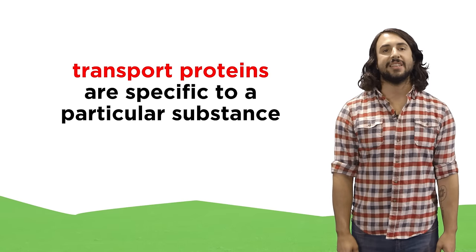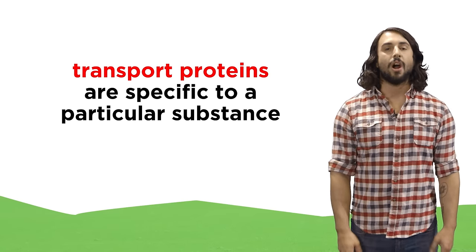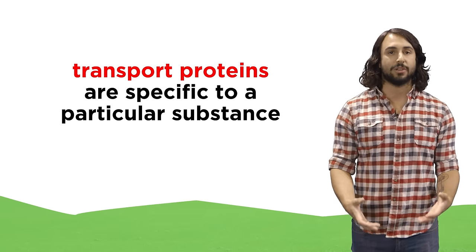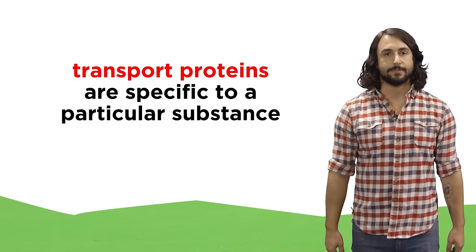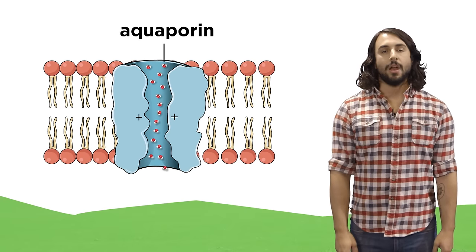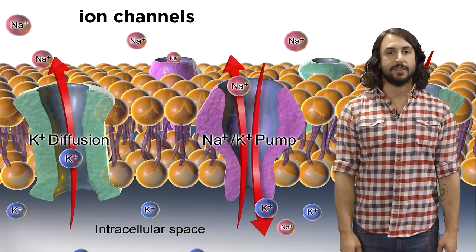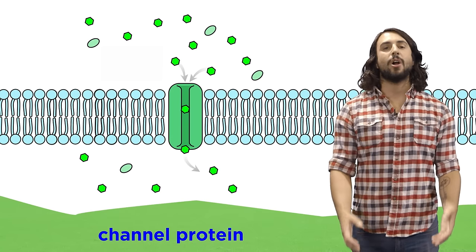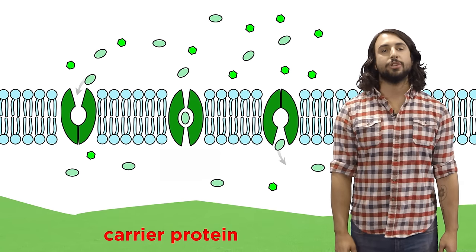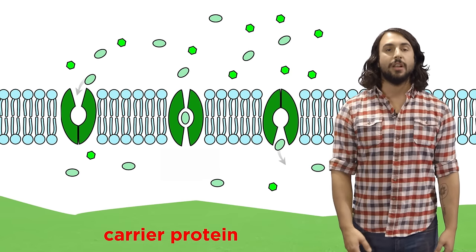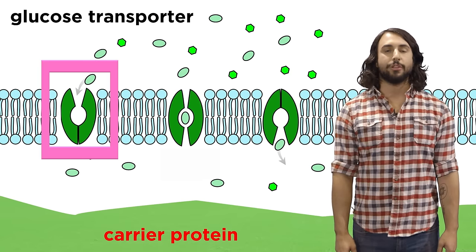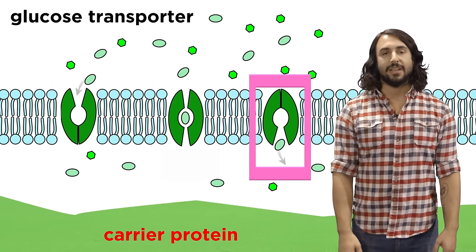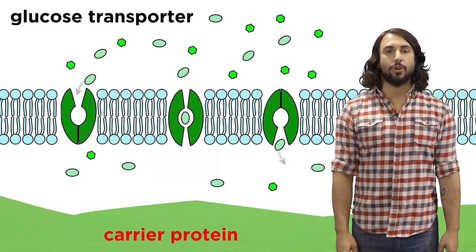Transport proteins that assist in either passive or active transport are highly specific, each allowing only a particular substance or small group of similar substances to pass through. Aquaporins move water, ion channels move ions, and so forth. Some of these are channel proteins that remain open, and some are carrier proteins which alternate between two conformations, like the glucose transporter, where binding with glucose causes it to change shape, and then once glucose is released it changes back to its original conformation.